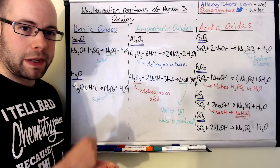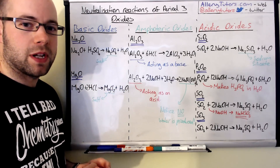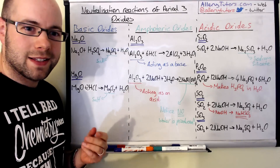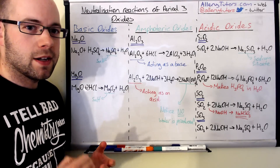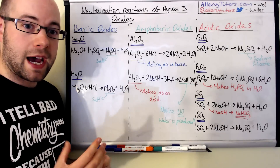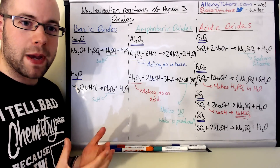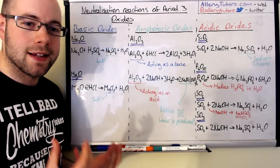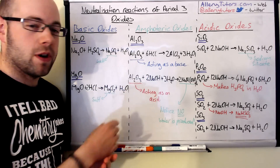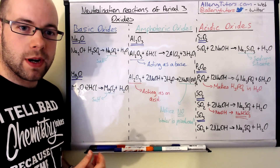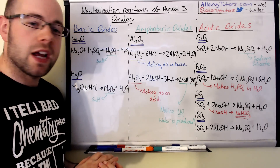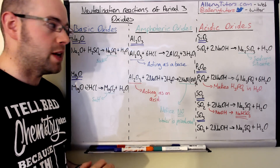It gets a little bit more complicated when we get to aluminium oxide, as this is actually classed as amphoteric. Amphoteric means that it will act both as a base and as an acid. I've written two equations to show this happening. Aluminium oxide is Al₂O₃.